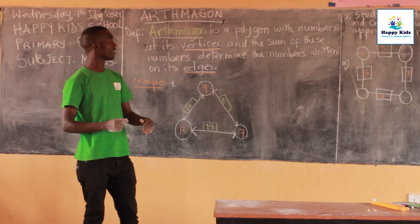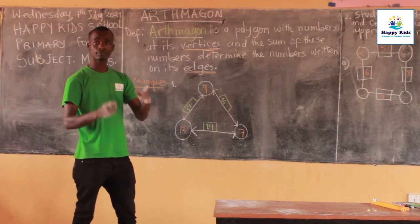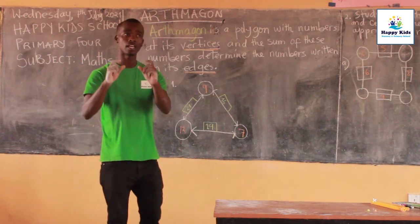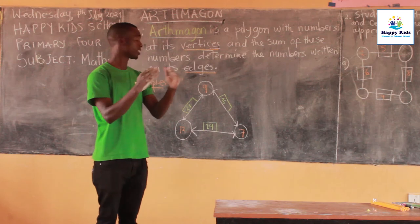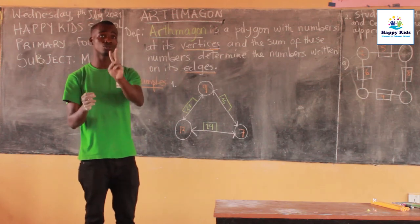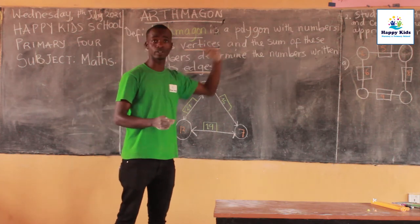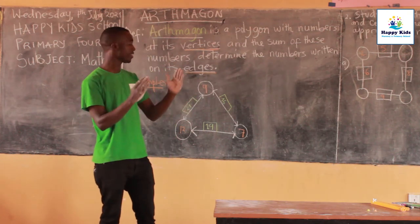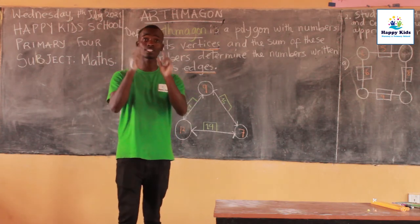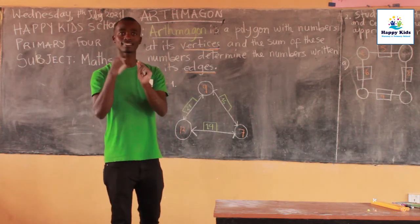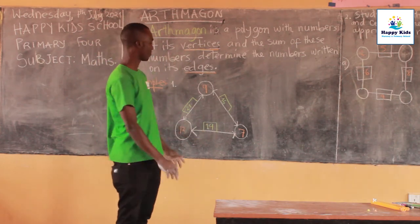What we call a vertex of a polygon — as you know, a polygon is a figure, a structure which is having more than two sides. That is what we call a polygon. A polygon is heading edges and vertices. When it is one, it is called a vertex, and when there are more than one, they are called vertices.